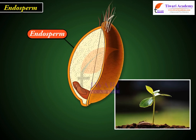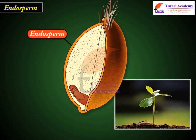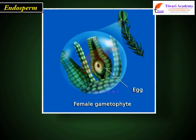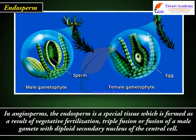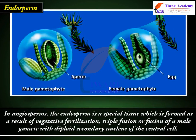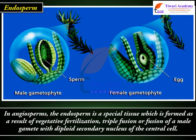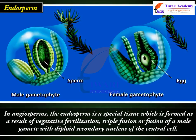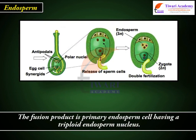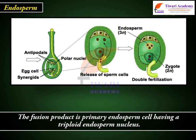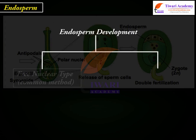Endosperm is the name of food-laden tissue which is meant for nourishing the embryo in seed plants. In gymnosperms, it represents the female gametophyte. In angiosperms, the endosperm is a special tissue formed as a result of vegetative fertilization — triple fusion, or fusion of a male gamete with the diploid secondary nucleus of the central cell. The fusion product is the primary endosperm cell having a triploid endosperm nucleus.